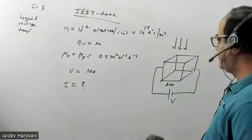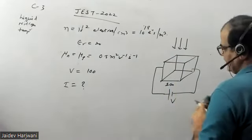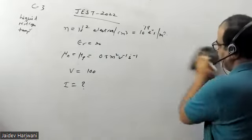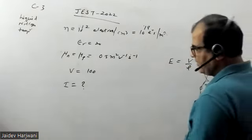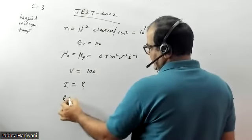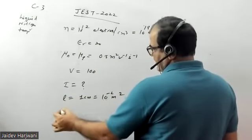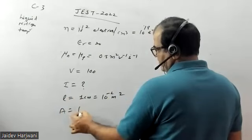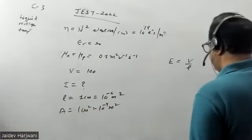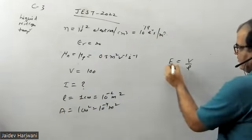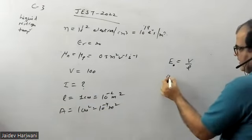Whenever you apply a voltage across a length L, the electric field will be E = V/L. Here the dimension of the cube is given: L is one centimeter, which becomes 10^-1 meters, and the cross-sectional area is one centimeter square, that is 10^-4 meters square. This is the electric field without a medium.